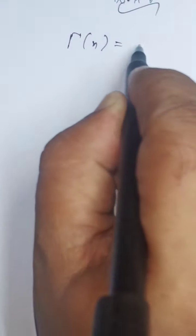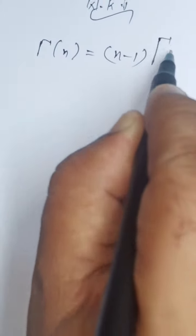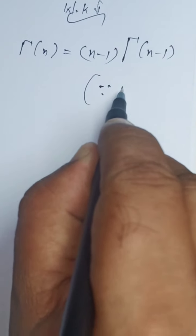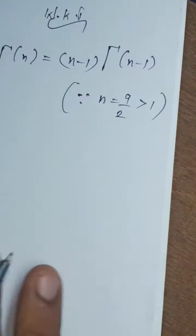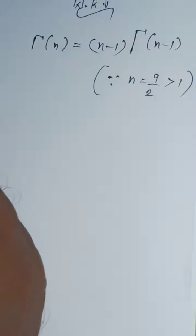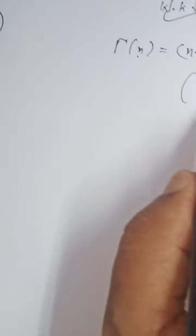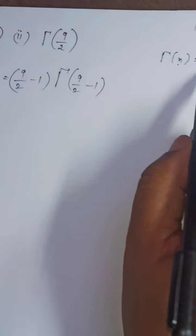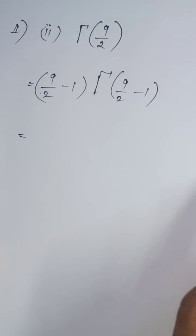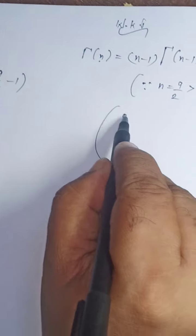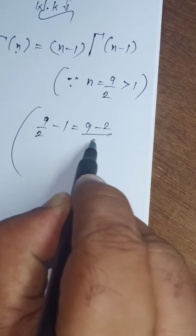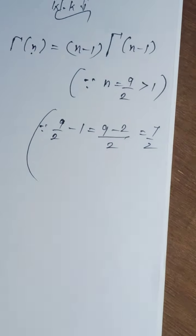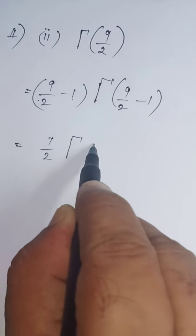The property: Gamma of n equals n minus 1 times Gamma of n minus 1. Since n equals 9 by 2, which is greater than 1, substitute in the formula: Gamma of 9 by 2 equals 9 by 2 minus 1 times Gamma of 9 by 2 minus 1. Simplifying, 9 by 2 minus 1 equals 9 minus 2 by 2, which is 7 by 2. So we get 7 by 2 times Gamma of 7 by 2.